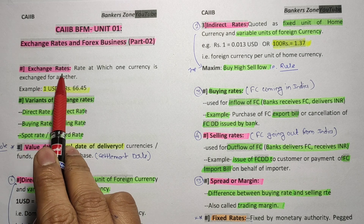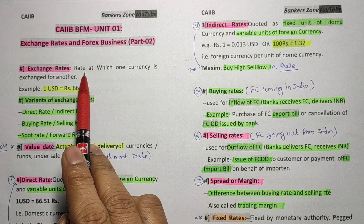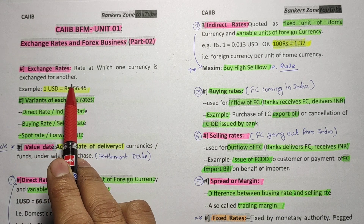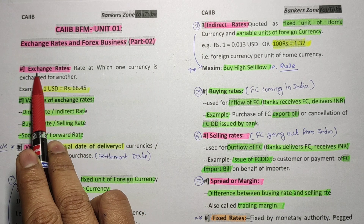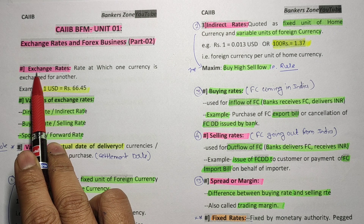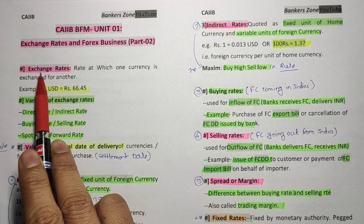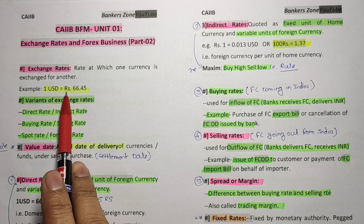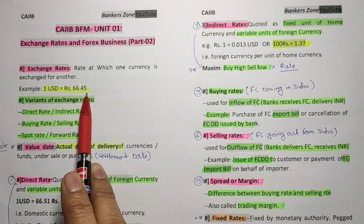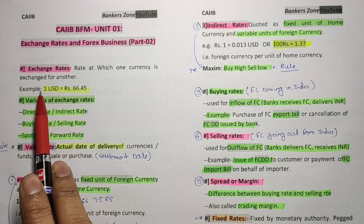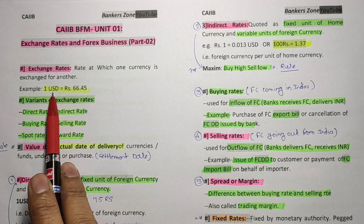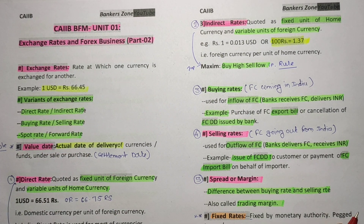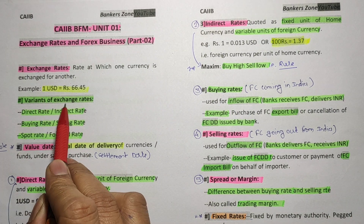What is the exchange rate? The exchange rate is simply the rate at which one currency is exchanged for another. The name itself tells us — we are exchanging one currency for another. For example, one US dollar equals 66.45 Indian rupees, meaning we are exchanging one dollar for 66.45 rupees. That is the exchange rate.